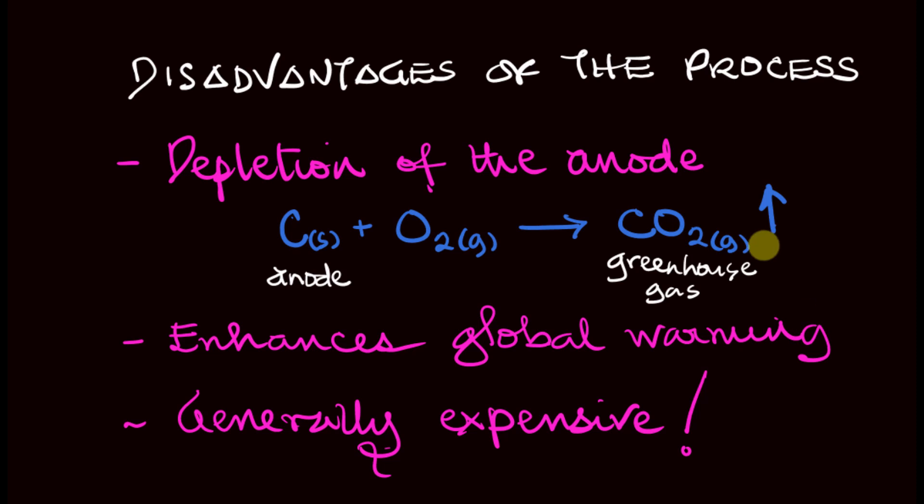Generally, because of the continuous or periodic replacement of the anode and the high cost of electrical energy, this process is very expensive. Though new technologies are being introduced or adopted that will bring down the cost of the production of aluminum.